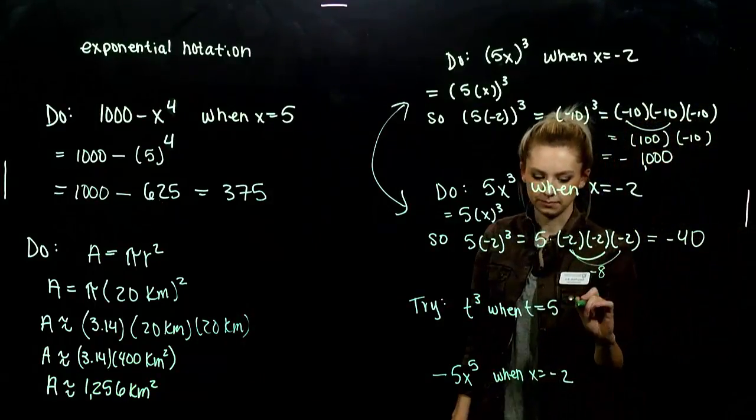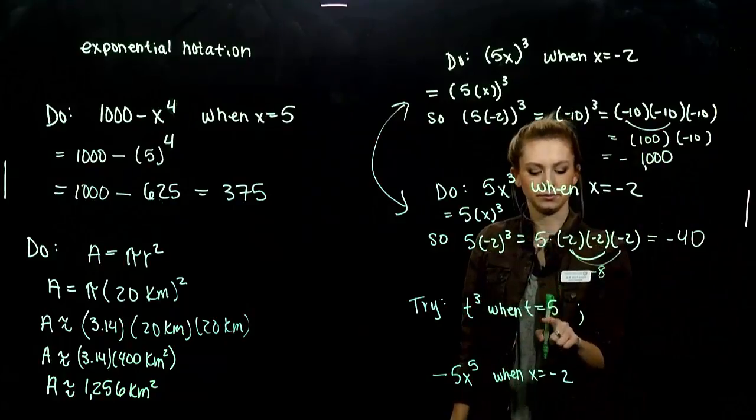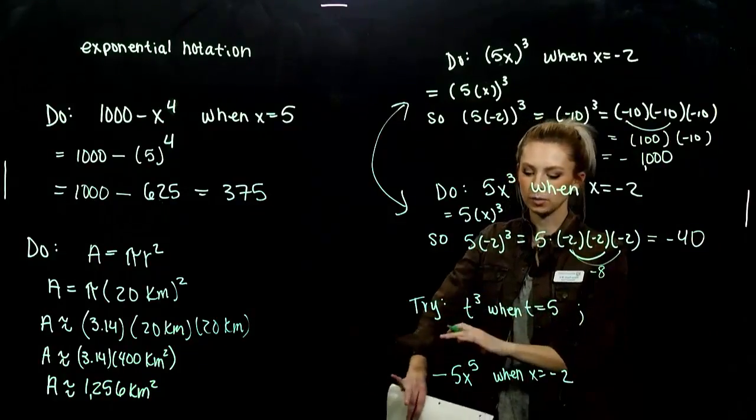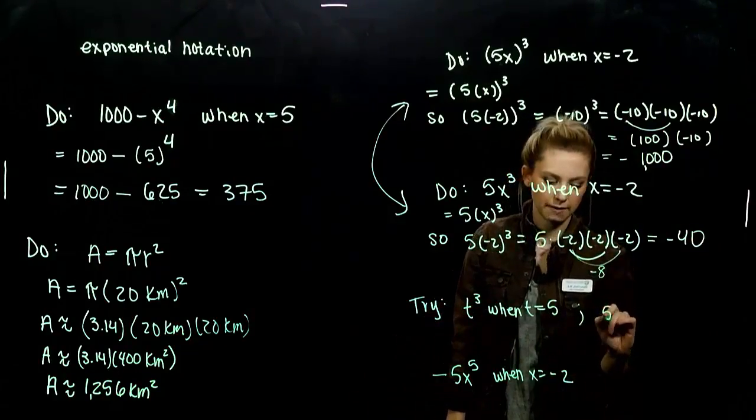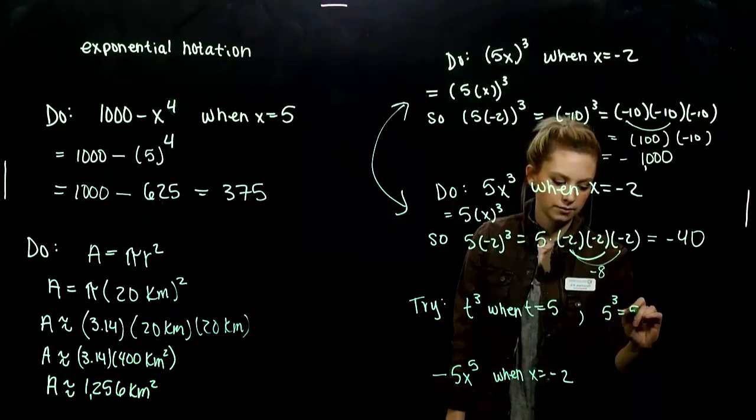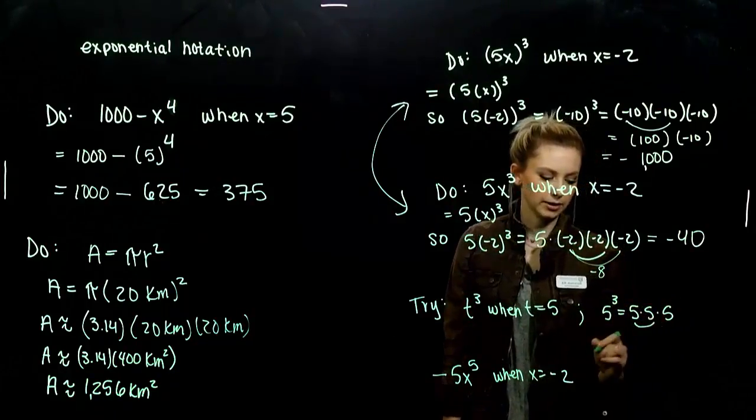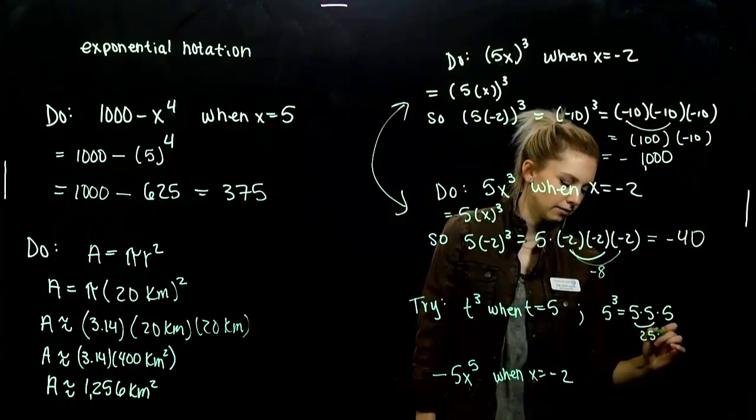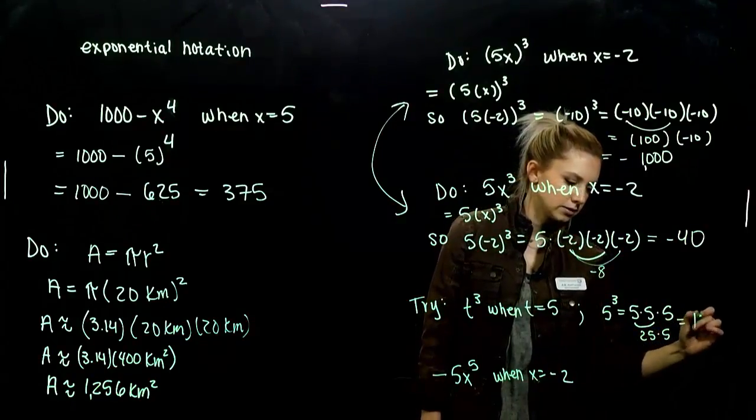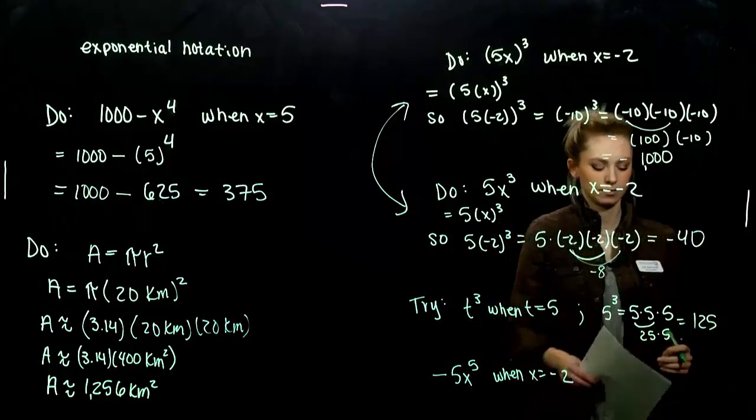What did the first mean? t to the third and t is equal to 5. Again, you can put parentheses around it. I'm looking at 5 to the third. 5 times 5 times 5. We can do it in parts. First two will give us 25. Times another will give us 125. Positive.